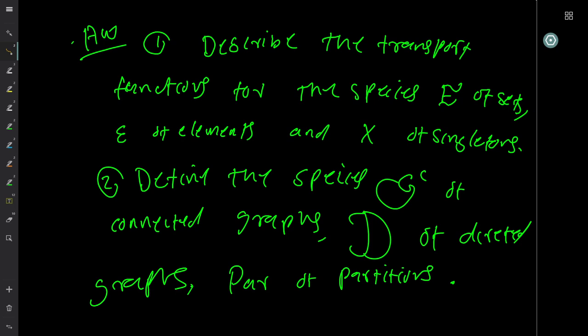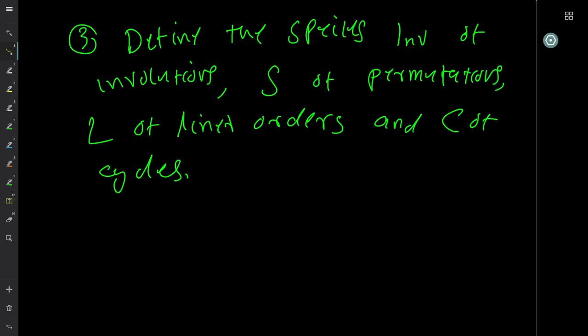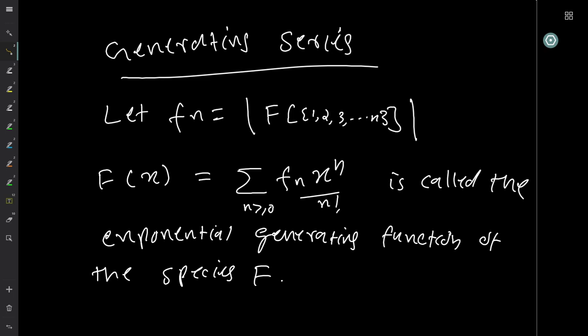Also define species Inv of involutions, species S of permutations, species L of linear orders, and species C of cycles. We have already come across most of these earlier.